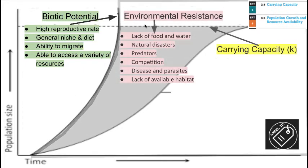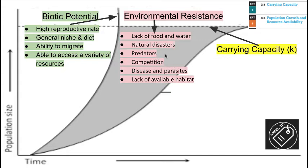Populations don't grow like this forever — there's not just sheer biotic potential in an ecosystem. Environmental resistance occurs: lack of food and water, natural disasters, predators, competition, diseases, parasites, and lack of available habitats all depress the population negatively. Because of this, populations ultimately can't grow forever. The interplay between biotic potential and environmental resistance is represented in this gray area on the map. We see the population eventually level off at carrying capacity K, shifting away from a J curve into more of an S shape, which we'll define later.